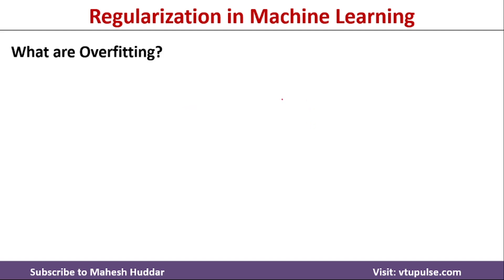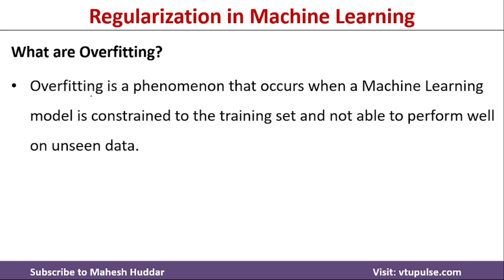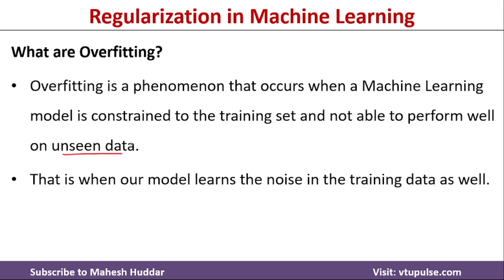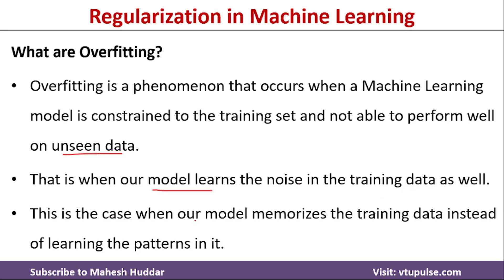Overfitting is a phenomenon that occurs when a machine learning model is constrained to the training set — that is, the model works fine on the training set but not on the testing or validation data, also known as unseen data. This occurs because the model learns the noise in the training data and memorizes the training data instead of learning the patterns within it, so it fails to replicate performance on the testing data.